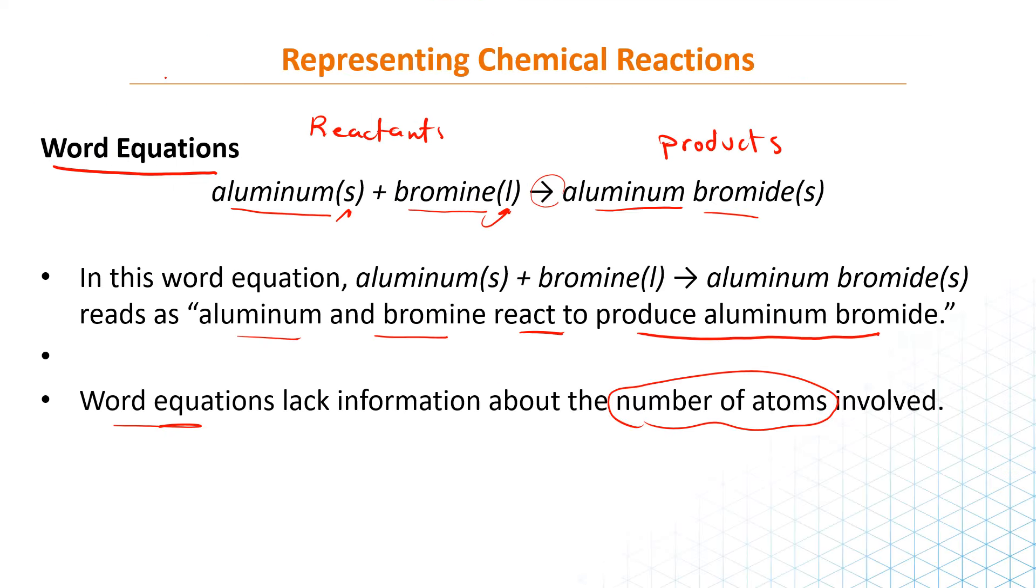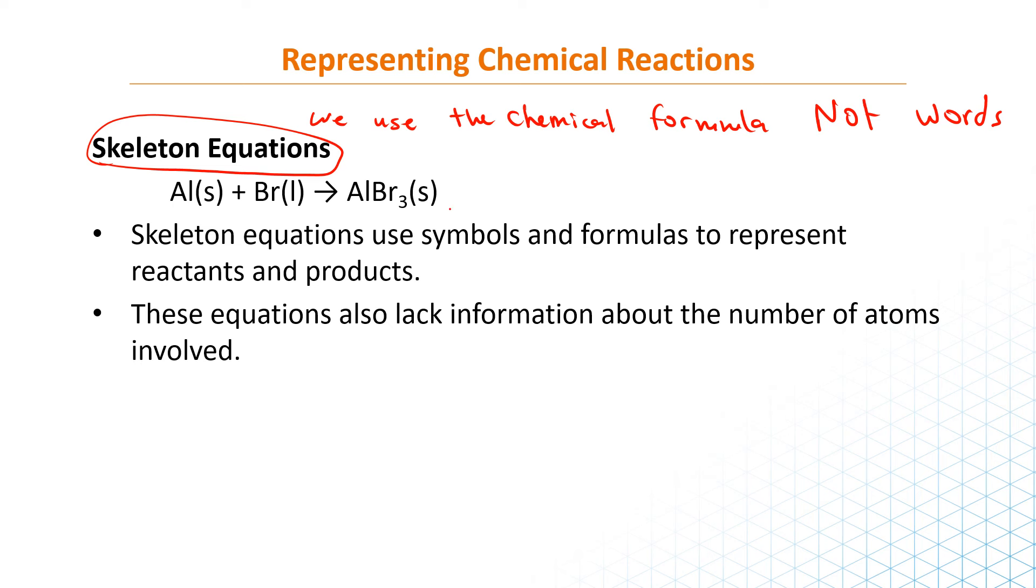So how can we write the word equation here? You do it in the following manner. So the word equation uses words guys. So you write the reactants - الreactants على اليسار - and the products على اليمين. So you write aluminum solid plus bromine liquid - we'll put the reactants - gives me aluminum bromide. So in this word equation, it reads as aluminum and bromide react to produce aluminum bromide. The word equation does not tell you anything about the number of atoms. I just know who is the reactant and who is the product. Now if we want to write the skeleton equation, the skeleton equation we use the chemical formula not words. So if we go back here, you write your arrow here and you know that aluminum and bromide are reactants. So Al solid plus Br2 liquid gives me aluminum bromide solid. So this is the skeleton equation guys. We use the symbols and the formulas. And also the equation lacks information about the number of atoms involved. We know the number of atoms but sometimes it's the correct one, sometimes it's not correct. We are going to learn how to balance this equation.